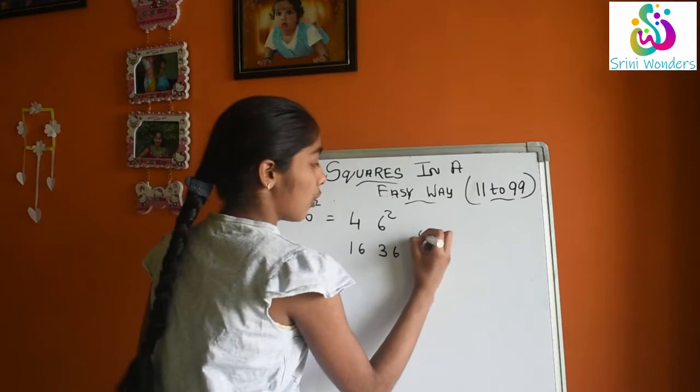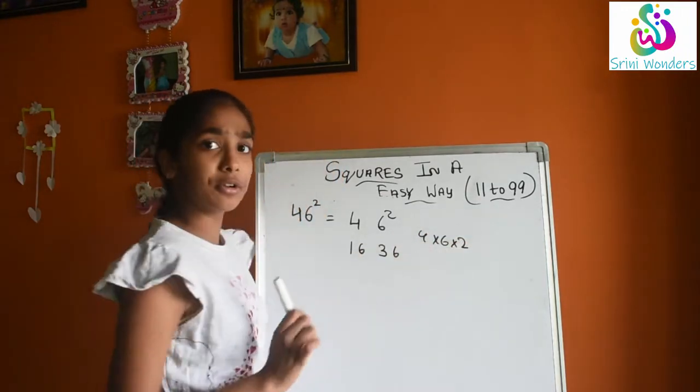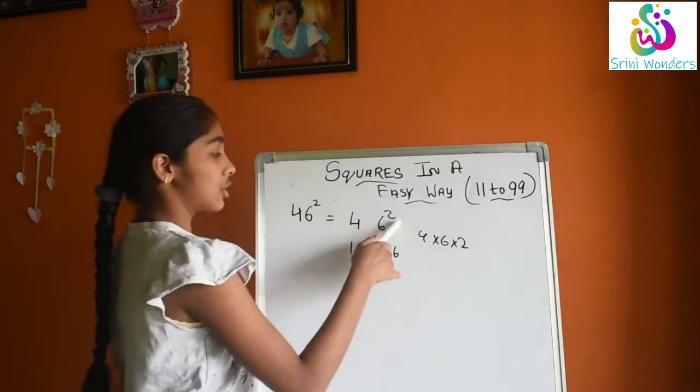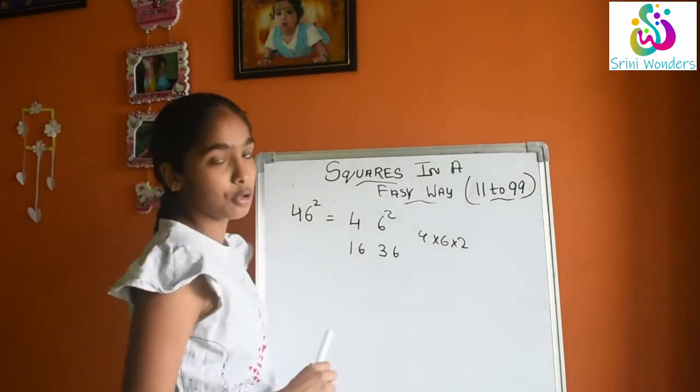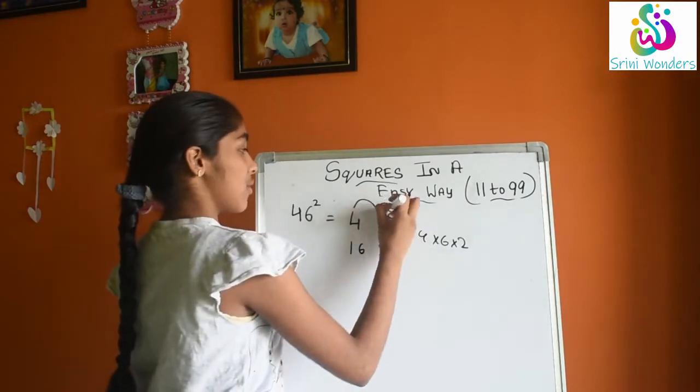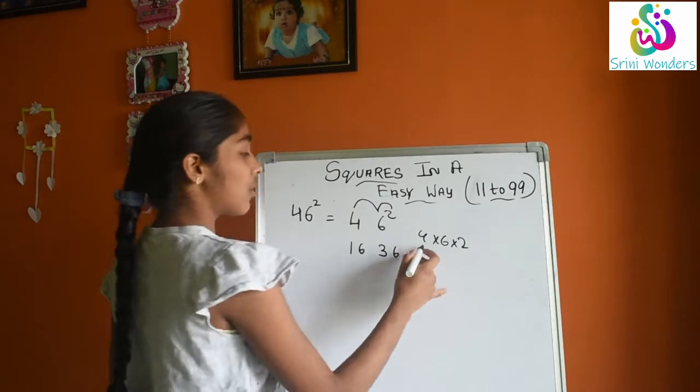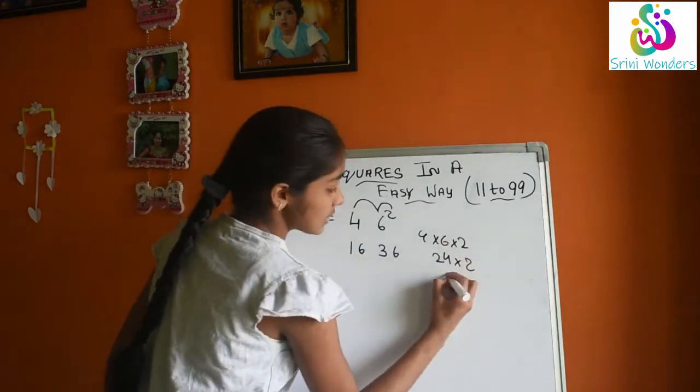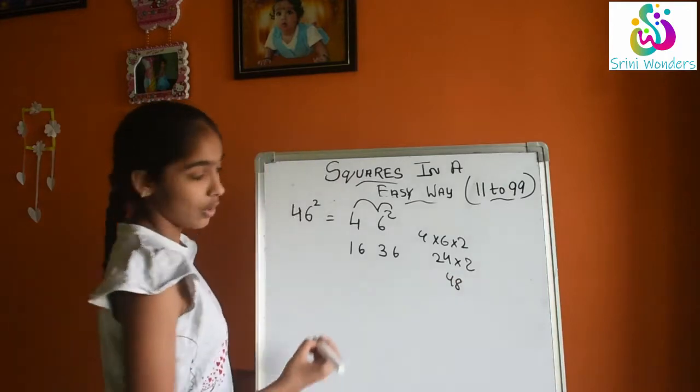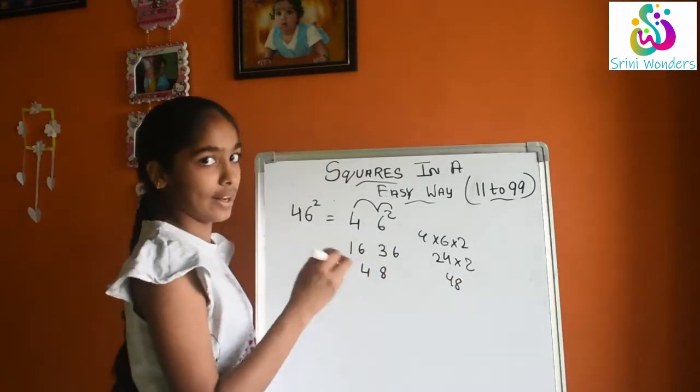Now we will do 4 into 6 into 2. Why we will do only 2? Because 2 means square. So we will do 4 into 6 into 2. Now 4 into 6 that is 24 into 2, that is 48. So now we will write here 48 in middle.